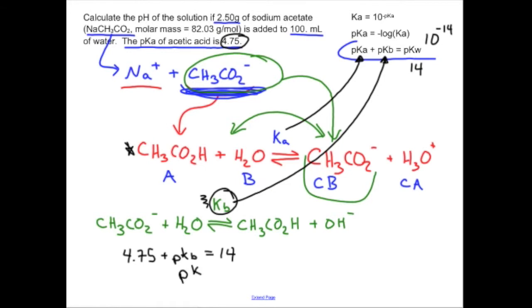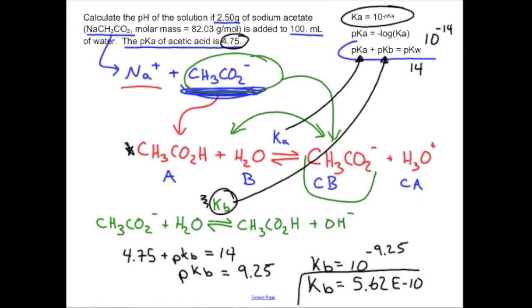Remember Kw is 10 to the minus 14. So pKw is equal to 14. What I need to know to actually crank into an ice table that's going to come up in the near future is I need to know Kb. But I'm able to use the Ka from this reaction in order to get it. So pKa is 4.75 plus the pKb equals 14. So I have that pKb is going to be equal to 9.25. My Kb is going to be equal to 10 raised to the negative pKb, which means my final Kb is 5.62e-10. And that is a super important number that we want to hold on to.